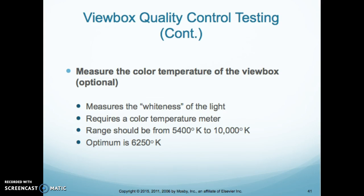We need to make sure that the color temperature of the view box — we look for the whiteness of the light. This requires a color temperature meter and the range should be between 5,400 to 10,000. The optimum is 6,250. When we're looking for color temperature, we look for the whiteness of the light.